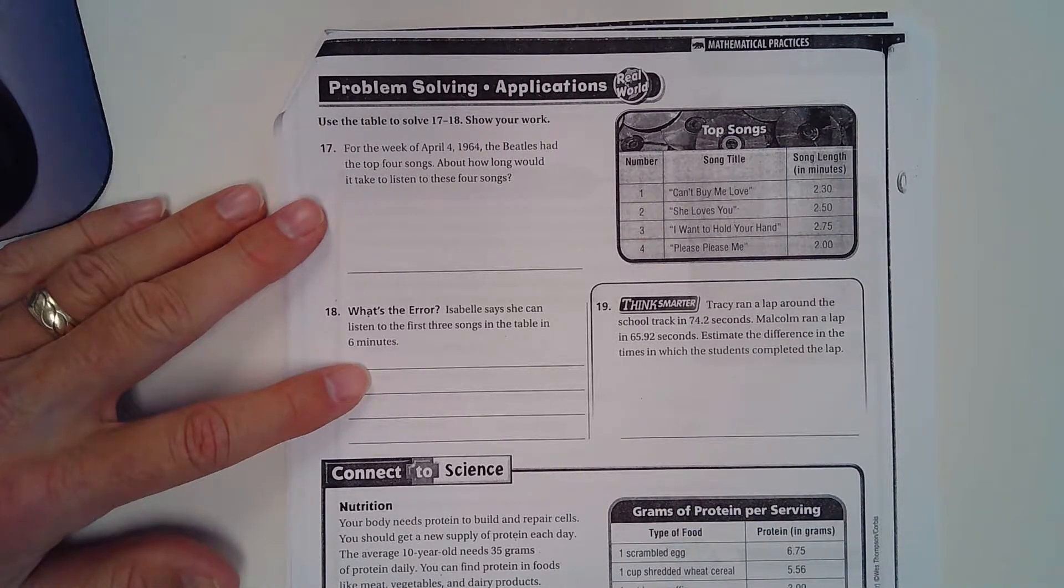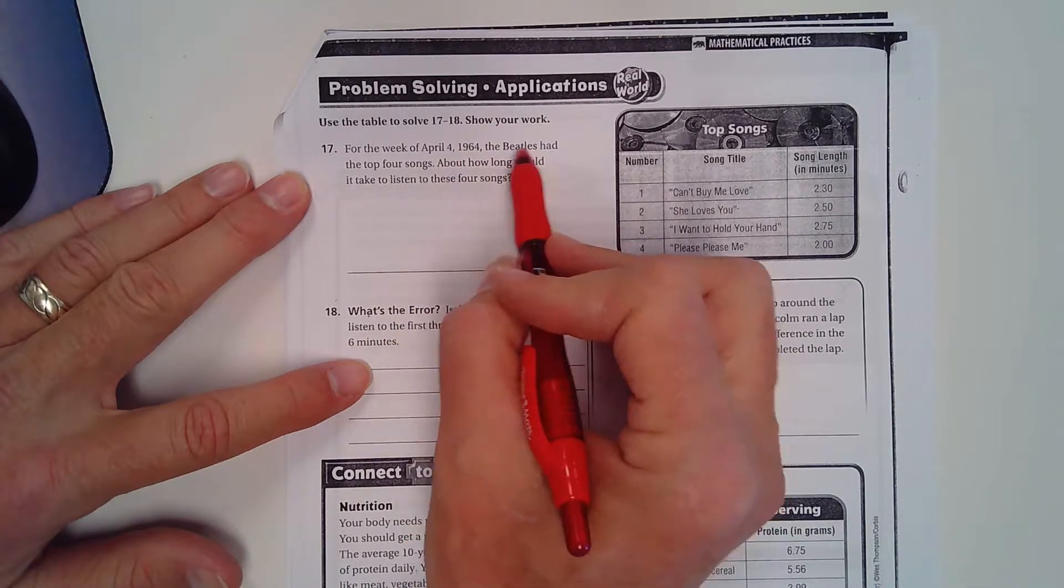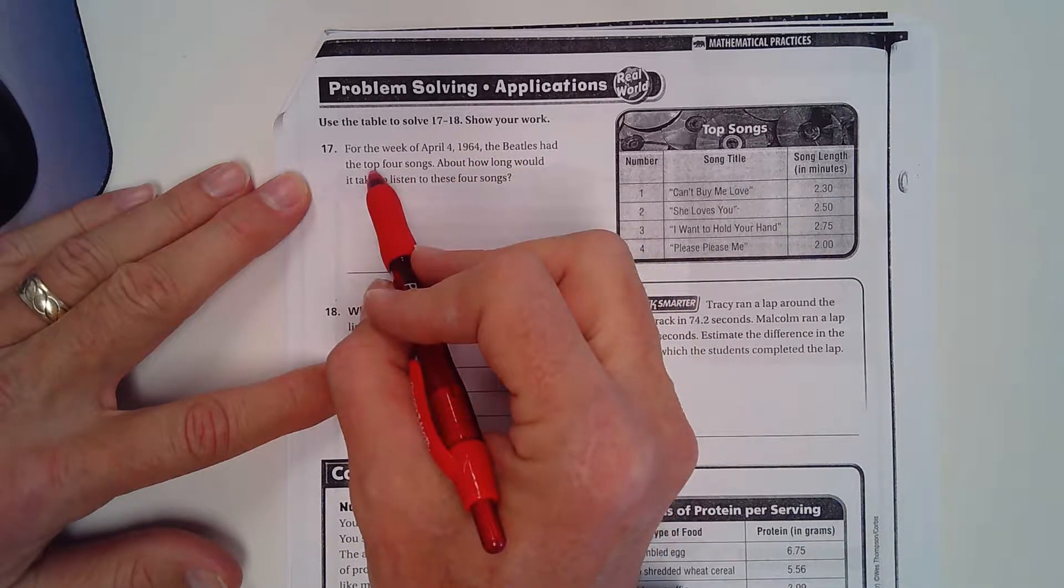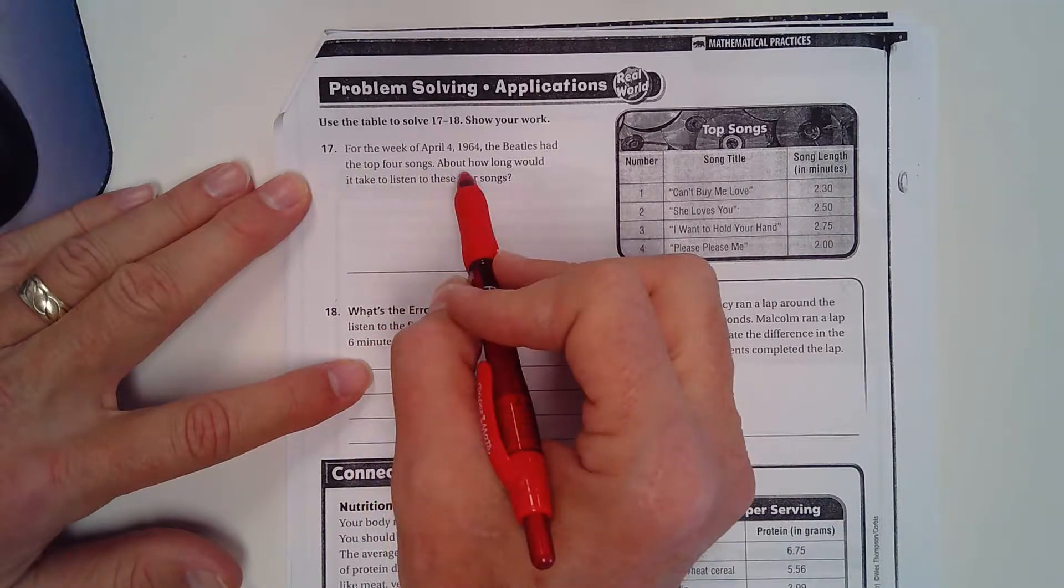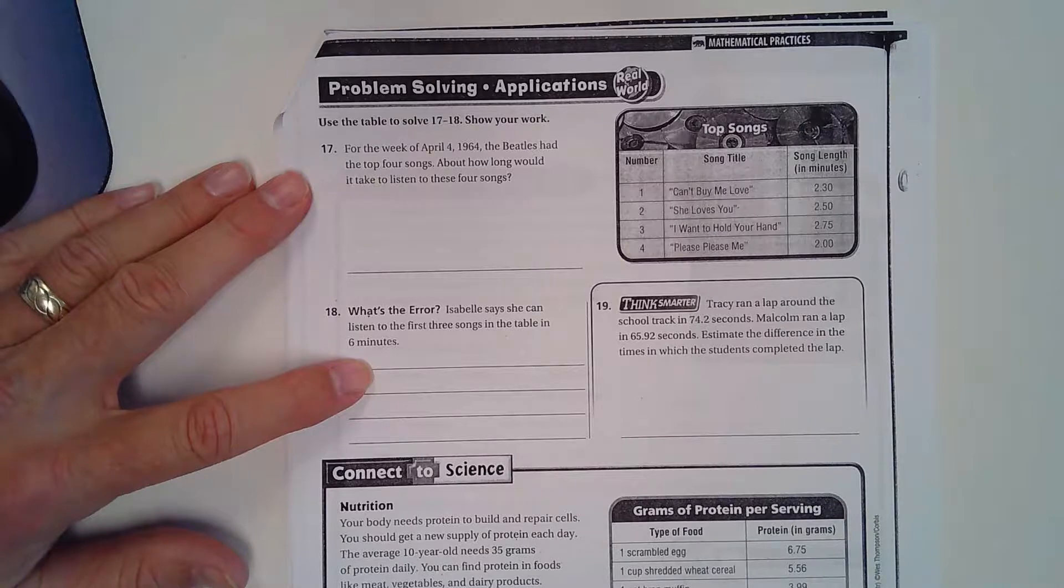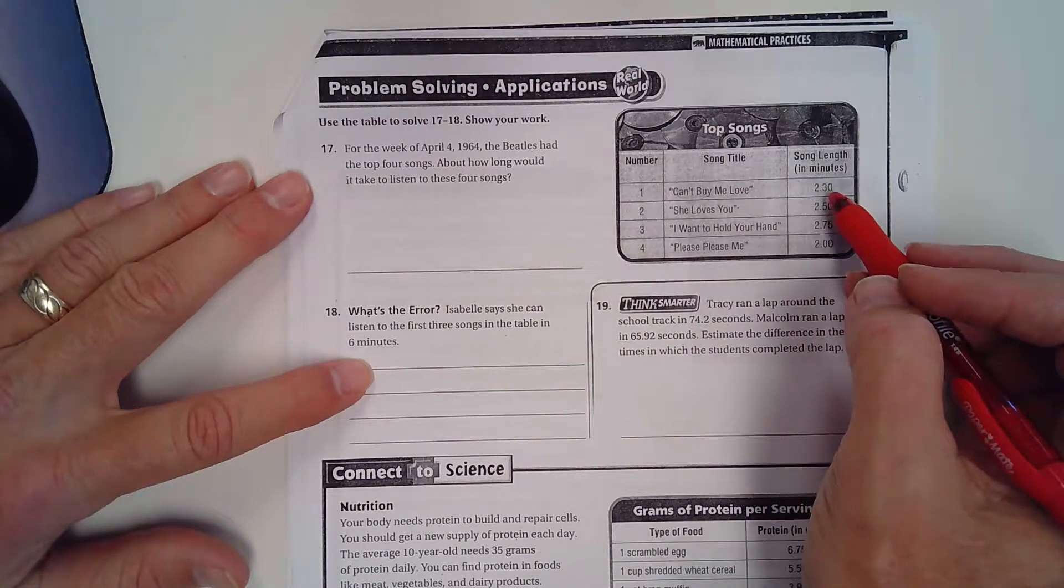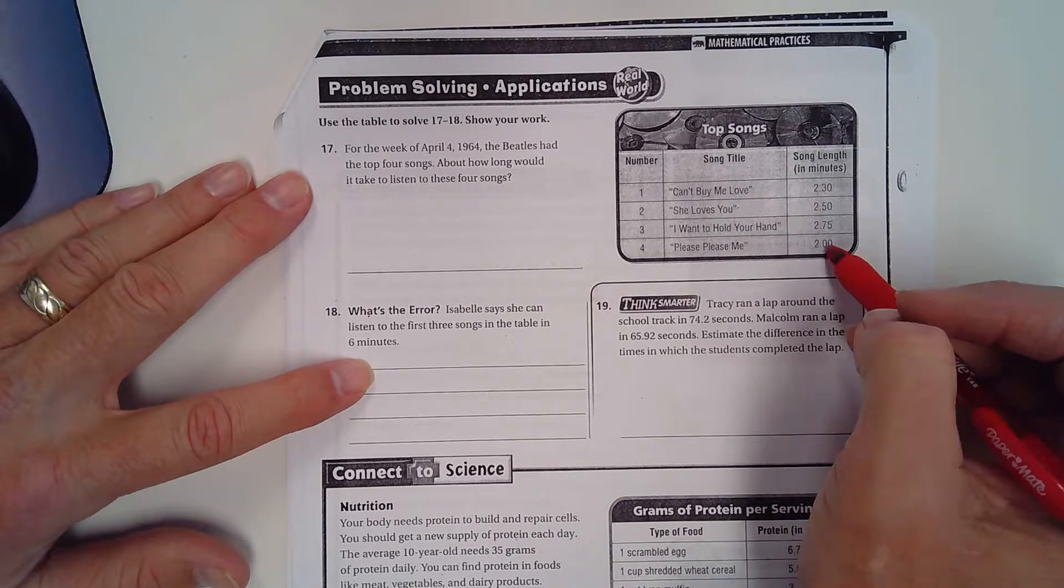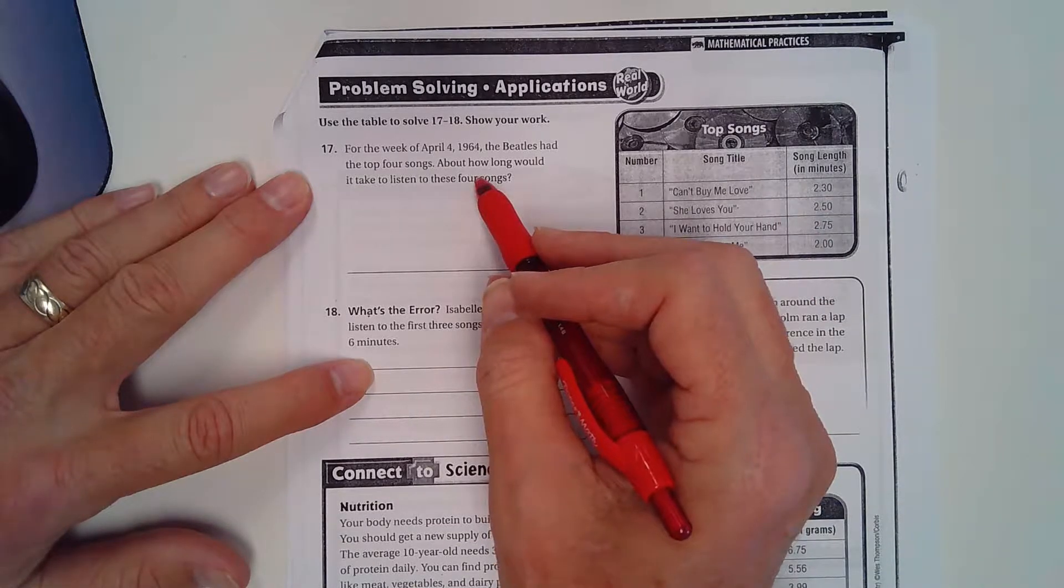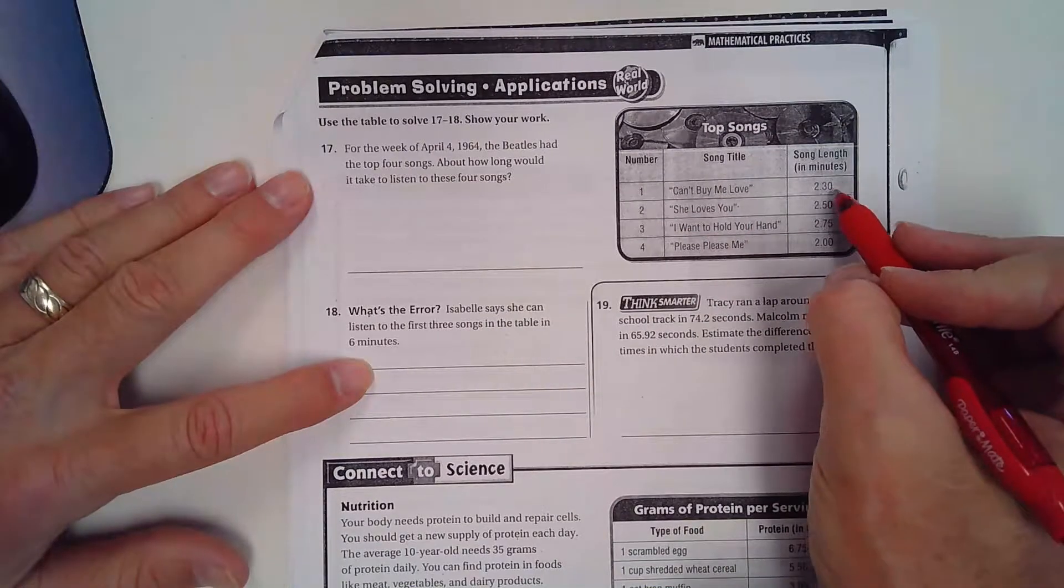So anyways, for the week of April 4th, 1964, the Beatles had the top four songs. Wow. About how long would it take to listen to each of these four songs? Great song. So they don't tell you whether we're going to do benchmark or rounding. So what is up with that? Well, let's just do it ourselves here. So I would look at this.